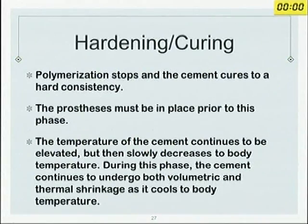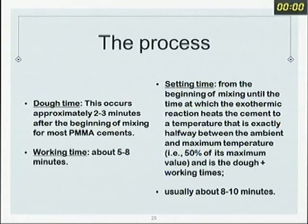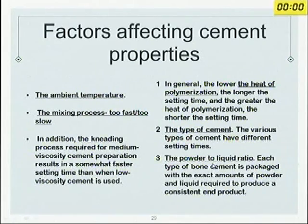A lot of factors affect setting time. The first important factor is ambient temperature. Pre-chilling of the cement is fine — put it in the fridge, but don't chill it too long. More importantly, get the cement to the theatre a few minutes before implanting it and let it reach room temperature. Theatre temperature is what matters most: the lower the theatre temperature, the more working time you get. If you mix too fast, the local temperature rises and setting time decreases. Powder-to-liquid ratio from cement to cement will also change your working time.